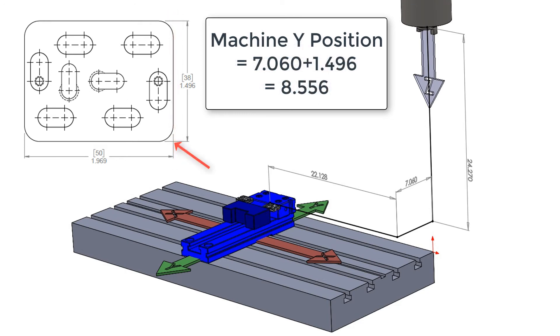If I next wanted the machine to position the center of the spindle over the corner of the part as shown by the red arrow, I would program y-1.496 and the machine would go to its y8.556 coordinate.